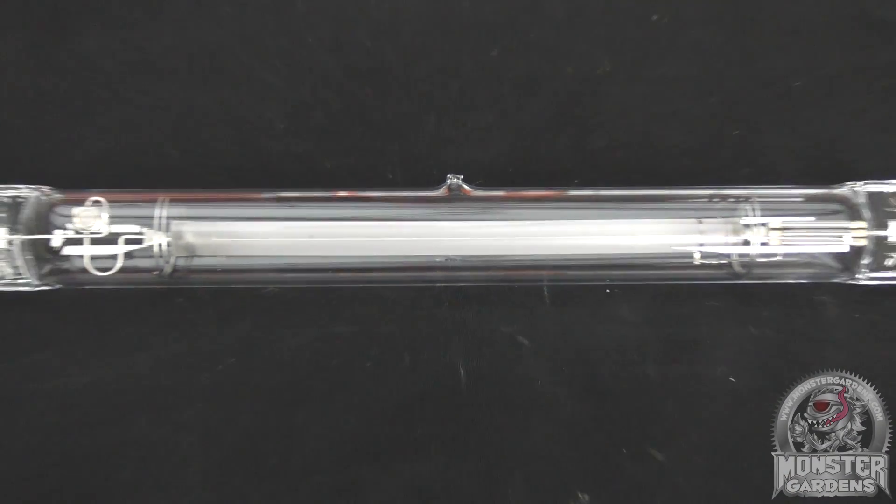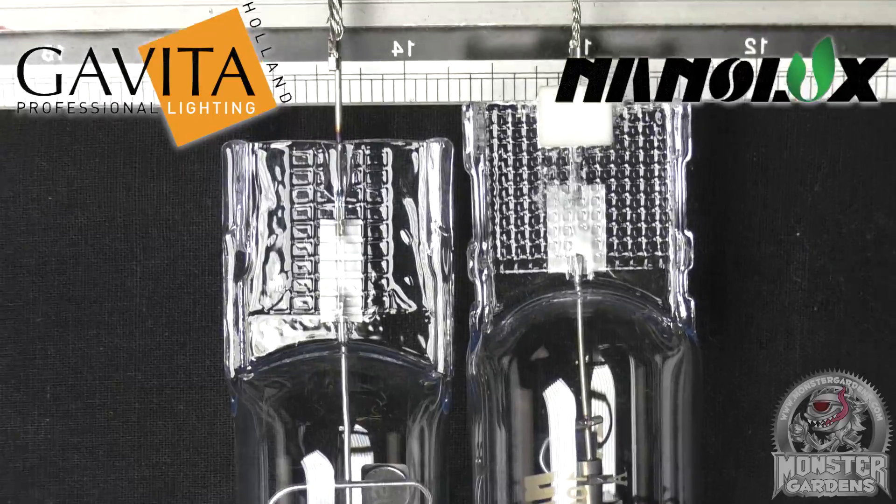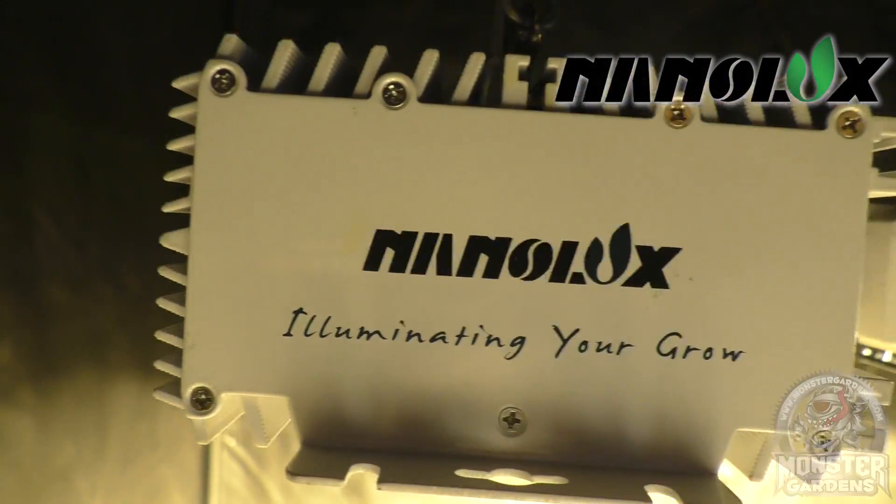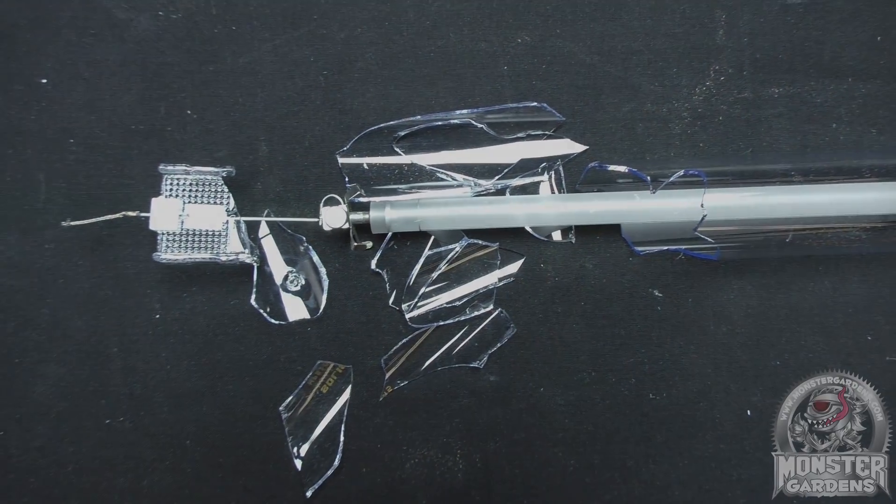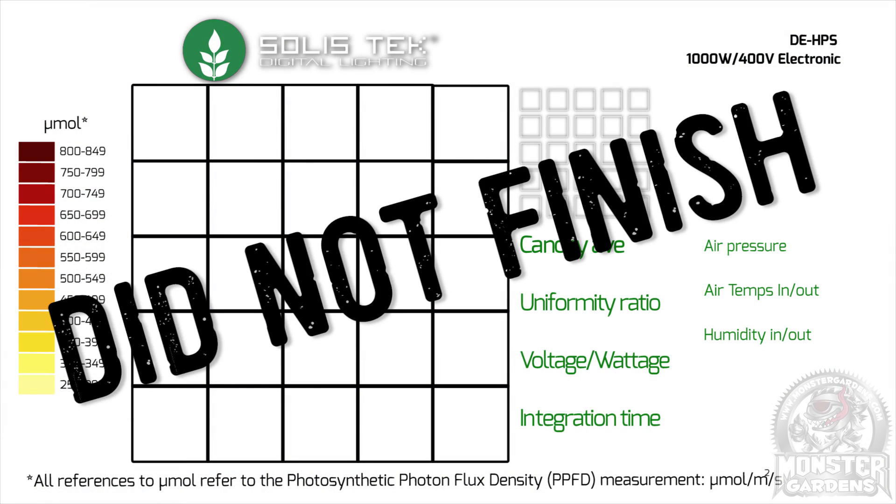Perhaps some of these bulbs have been designed around a particular fixture, and that would explain the differences in length. Whatever the case, take care, as mistakes are not only costly, they can be dangerous too. Sadly, this means that the Solastek gets a DNF for this test.